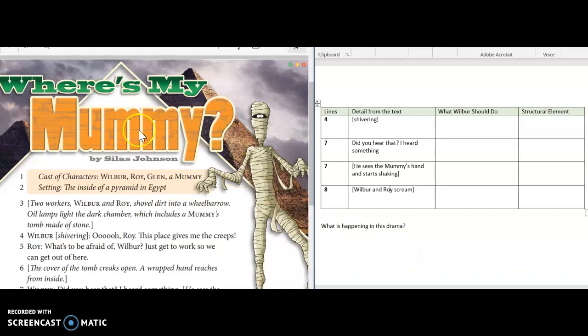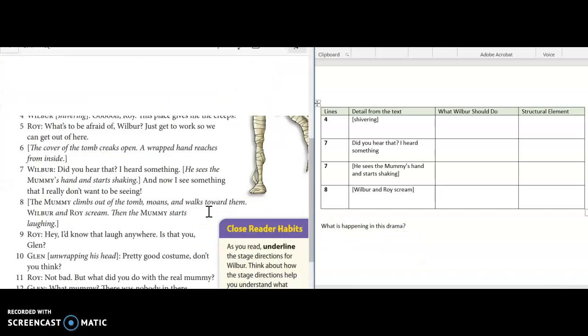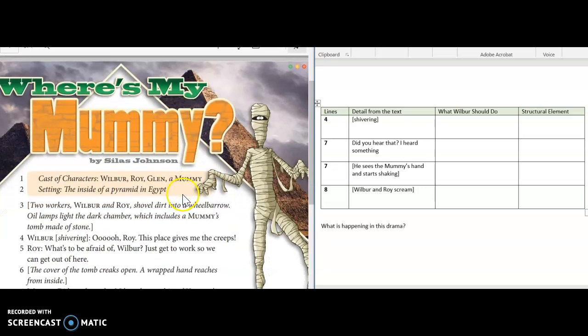In today's video we're going to take a look at this short drama, it's just one page titled Where's My Mummy, and then we are going to look at specific lines in this drama and they've given us some details from the drama. We have to determine what the character Wilbur should do at each of these parts in this performance or this drama and then identify the structural element that they're referring to.